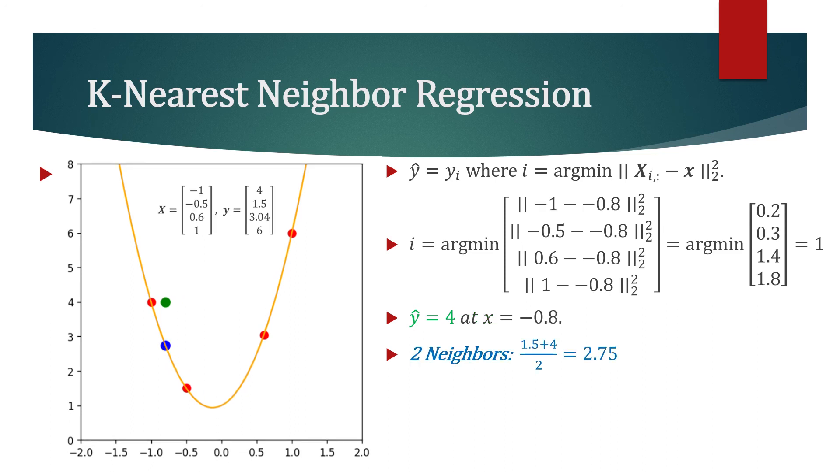Let's now plot this point. The blue point corresponds with our two nearest neighbor regression. And we see that it is much more accurate for this testing point.